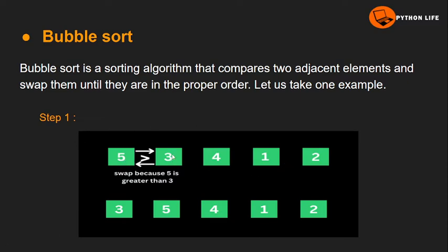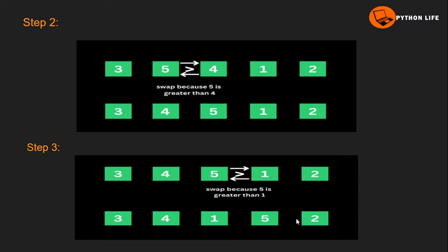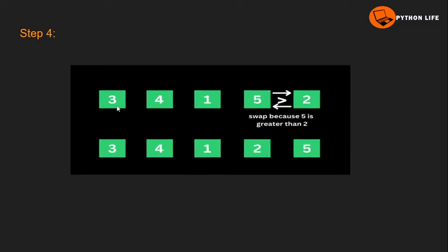In the first iteration, we take two adjacent elements. If 5 is the greater value, we start swapping. We continue swapping through the array, so after the first iteration the result is 3, 4, 1, 2, 5.